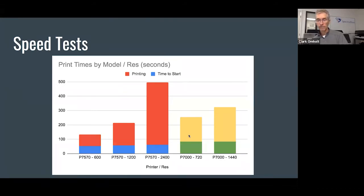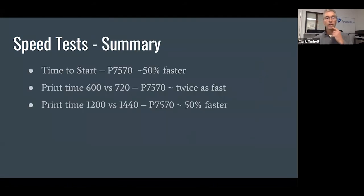In both resolutions of interest, this is a summary. The time to start is about 50% faster on the 7570 and it's twice as fast at 600 and about 50% faster at 1200 versus 1440, which is interesting because that's basically exactly what Mark showed versus the Canon. This is just a substantially faster printer.